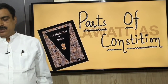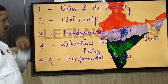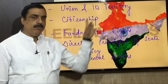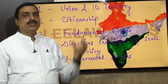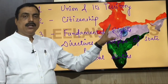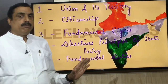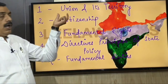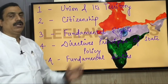There are 22 parts and 12 schedules in the Indian Constitution. Let's start memorizing the parts. The first block covers Part 1 to Part 4A. Part 1 is Union and its Territory — looking at the map of India, you see the entire Union divided into states and Union territories. Part 2 is Citizenship, Part 3 is Fundamental Rights, Part 4 is Directive Principles of State Policy, and Part 4A is Fundamental Duties.